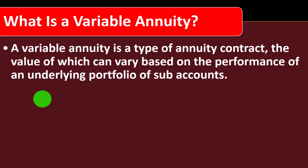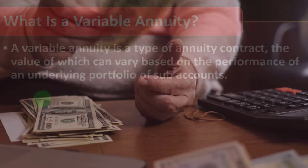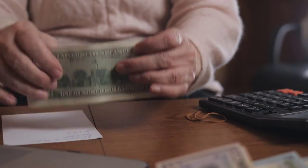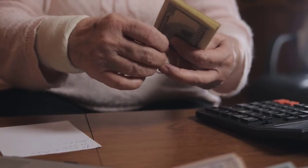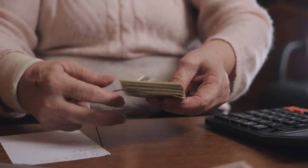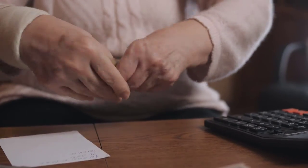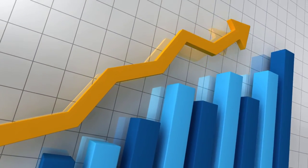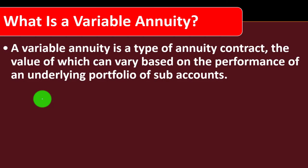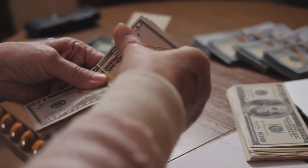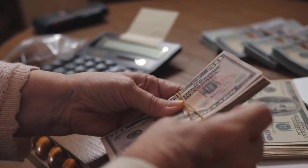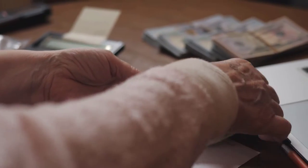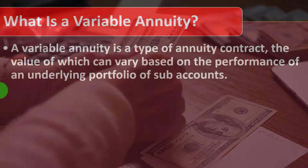A variable annuity is a type of annuity contract, the value of which can vary based on the performance of an underlying portfolio of sub-accounts. An annuity is basically a series of payments. When looking at an annuity as an investment, we're typically putting money in — possibly as a lump sum or multiple payments — with an insurance company, and hopefully that investment will grow.